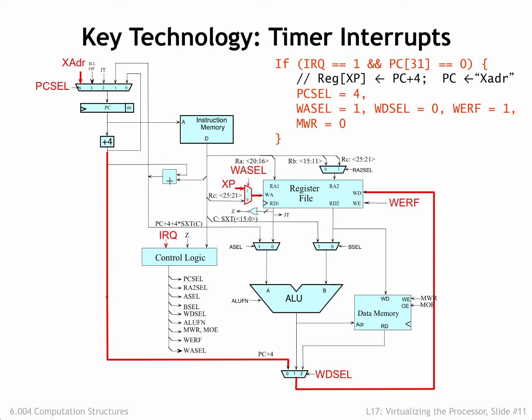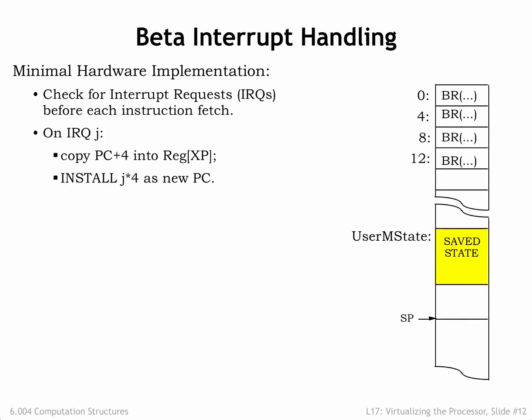So in the next cycle, execution starts with the first instruction of the kernel mode interrupt handler, which can find the PC+4 of the interrupted instruction in the XP register of the CPU. The interrupt hardware is pretty minimal: it saves the PC+4 of the interrupted user mode program in the XP register and sets the program counter to some predetermined value that depends on which external interrupt happened.